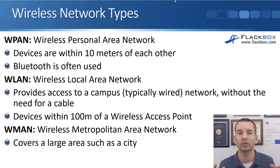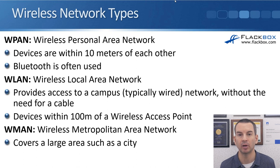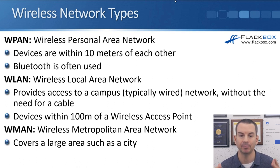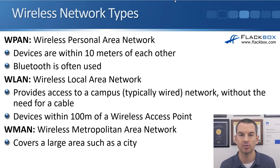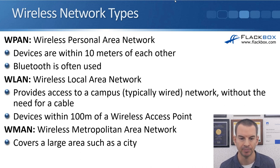The first type of wireless network is a WPAN — a wireless personal area network. In a WPAN, devices are very close together, within 10 meters of each other, and Bluetooth is often used for the connectivity.